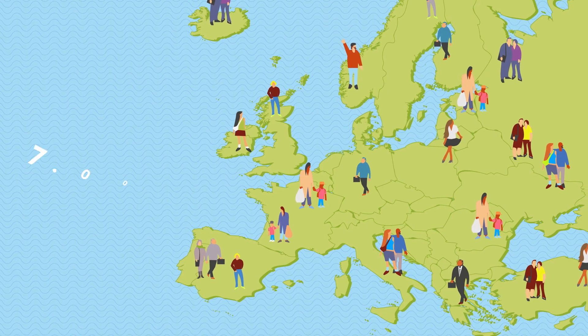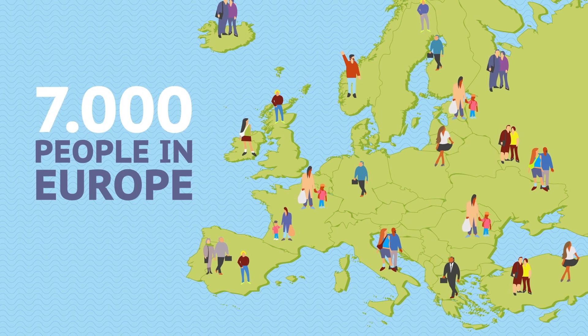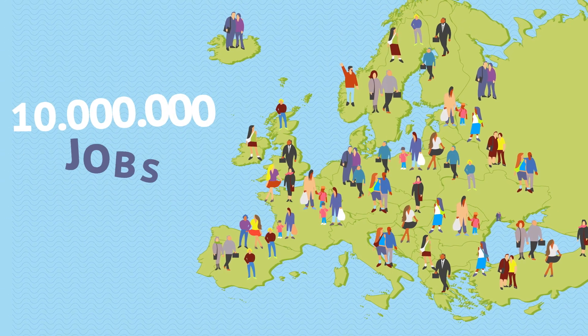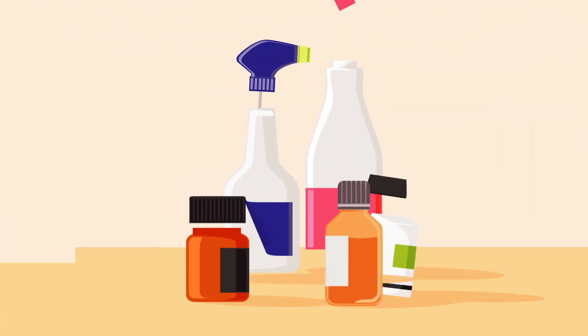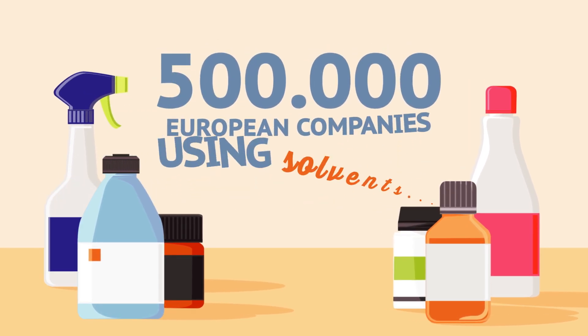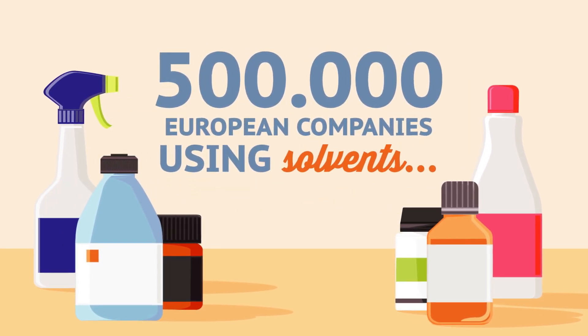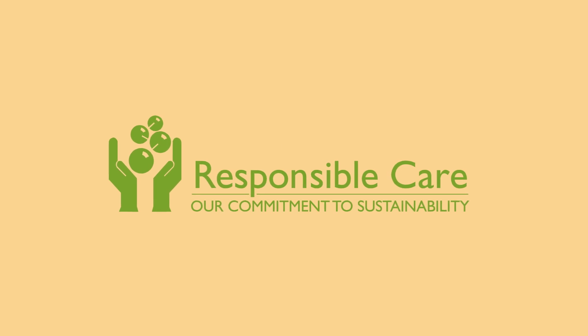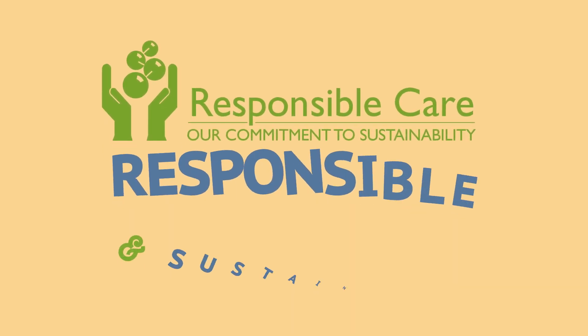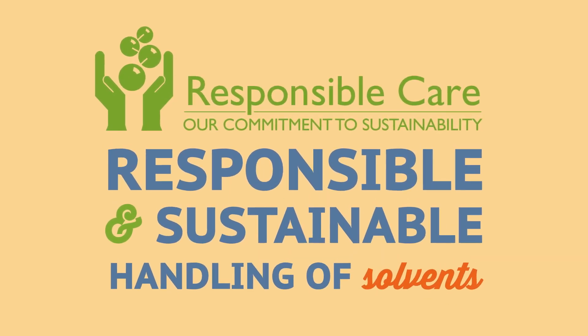The solvents industry directly employs more than 7,000 people in Europe but indirectly generates more than 10 million jobs with more than half a million European companies using solvents. Through its work with industry and industry partners, ESIG contributes to the responsible and sustainable handling of solvents.